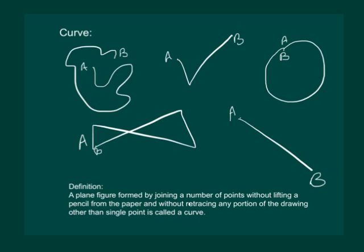All these figures are called curves. And hence we define curve as a plane figure formed by joining a number of points without lifting a pencil from the paper and without retracing any portion of the drawing other than a single point. What does that mean?